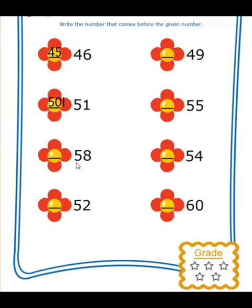Next, we have 58. And what comes before 58? Count backward. And answer is 5, 7, 57. You will count backward and you will get the answer.